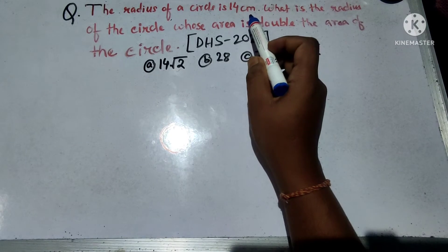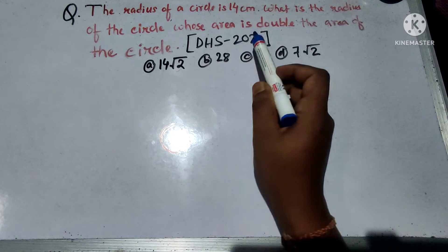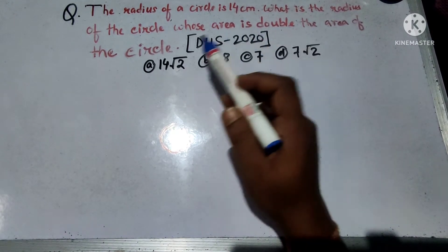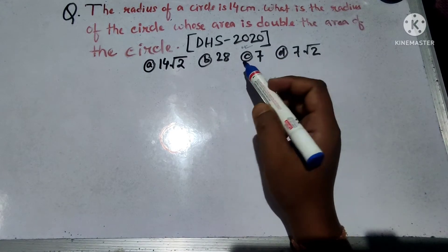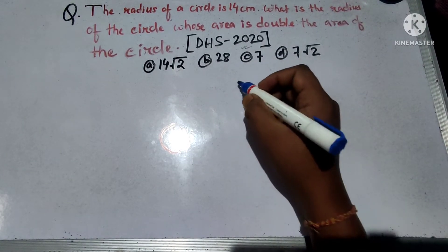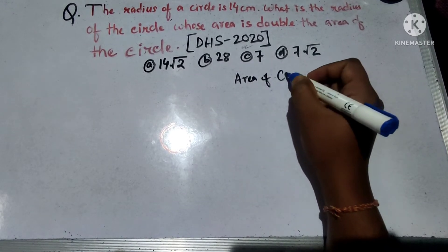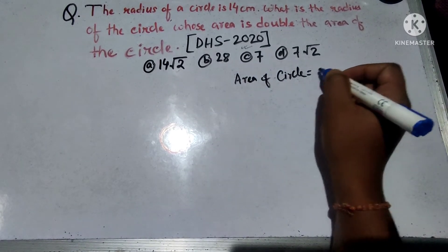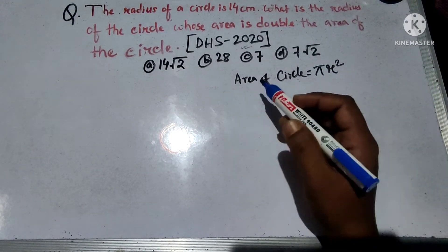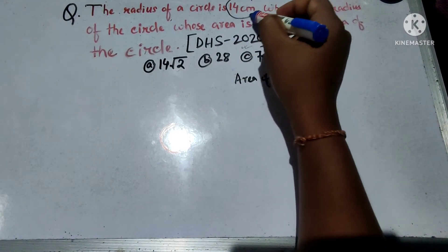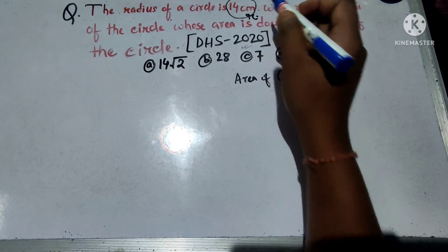The radius of the circle is 14 cm. What is the area of the circle? The area of the circle is πr squared.